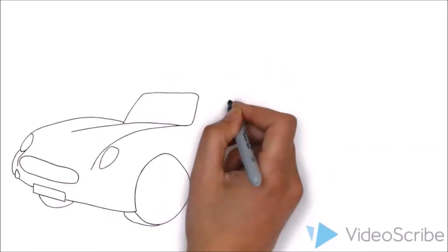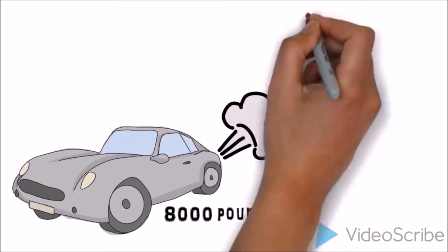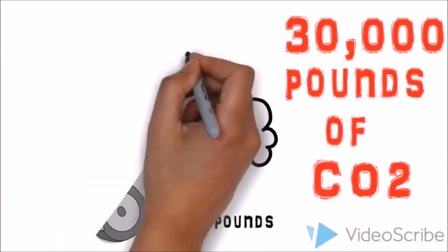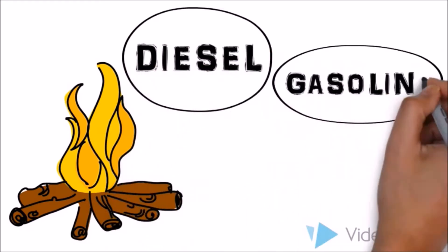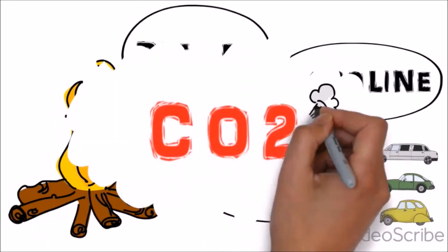A typical mid-sized car that weighs 8,000 pounds would emit over 30,000 pounds of carbon dioxide in its lifespan. When fossil fuels are burned to produce diesel, gasoline or petrol to power cars, carbon dioxide is produced.